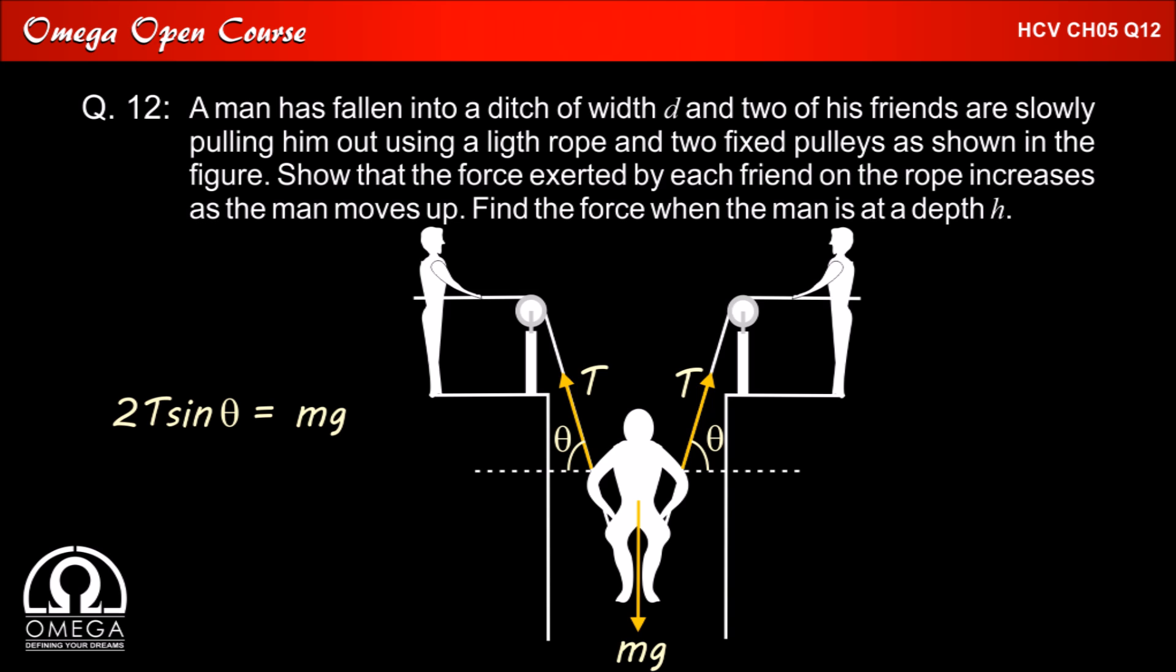Now, the vertical component of the tension has to support the weight of the person. So 2T sin theta must be equal to mg. This gives us tension is equal to mg by 2 sin theta.